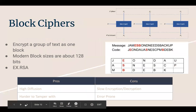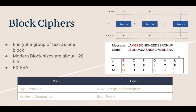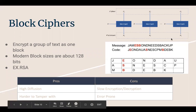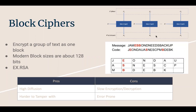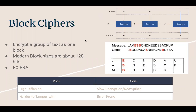Block ciphers are an example of diffusion. You pick an arbitrary block size and encrypt based on blocks — breaking up the plain text into blocks and encrypting each one individually. When decrypting, you also need to know the block size. Modern block sizes are about 128 bits. Block ciphers are hard to tamper with, but they are slow because you can only encrypt one block at a time, and more error-prone due to the more complicated procedure.